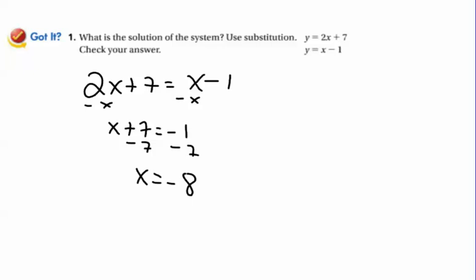I can take this, and I can plug it into either one of those two equations. I'm going to plug it into the bottom one. Y equals negative 8 minus 1. So Y is negative 9. So these guys cross at negative 8 comma negative 9. Now, you could have plugged these into your calculator if you wanted to. Would have done the same thing.